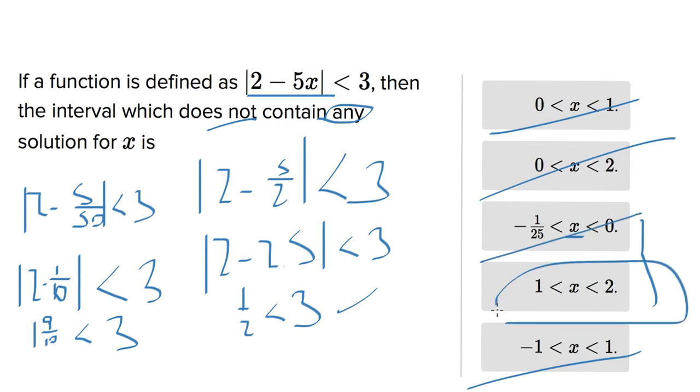So that leaves us with answer choice D. And the reason that that's correct is if you were to plug in 1 for example you'd get 2 minus 5 which gives you a value of negative 3. And negative 3 when you take the absolute value of negative 3 gives you a positive 3. And 3 is not less than 3. It's equal to 3. So we can cross that out.